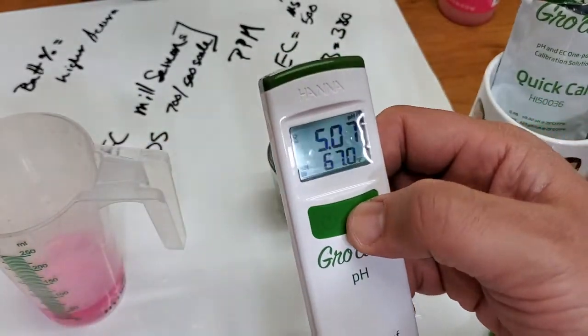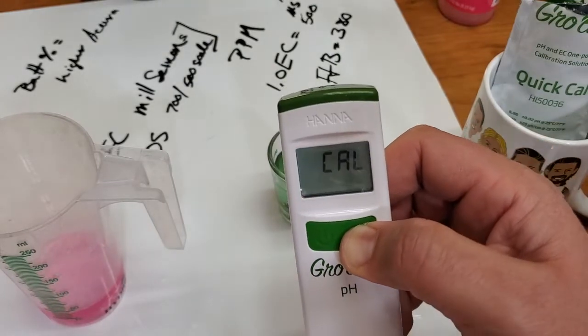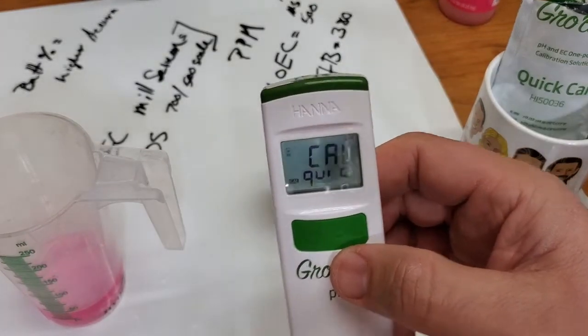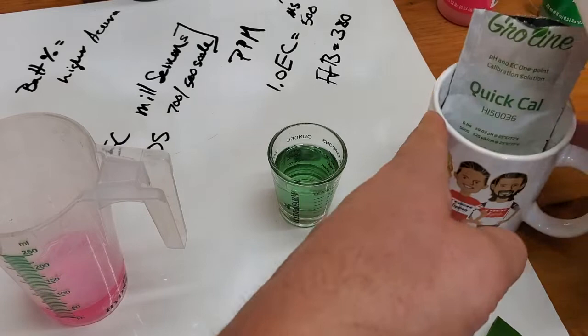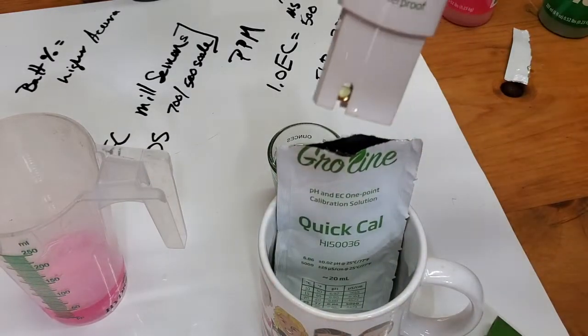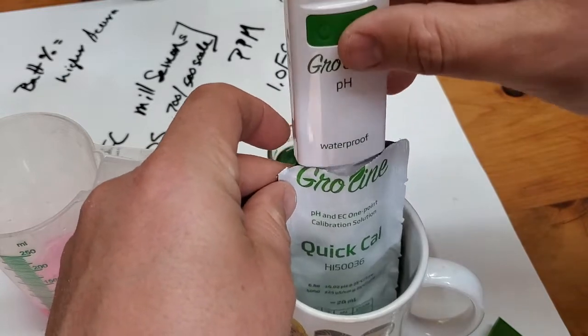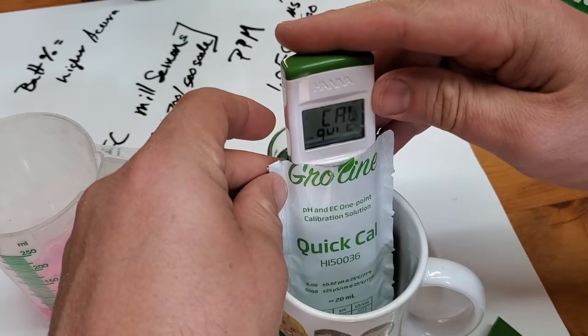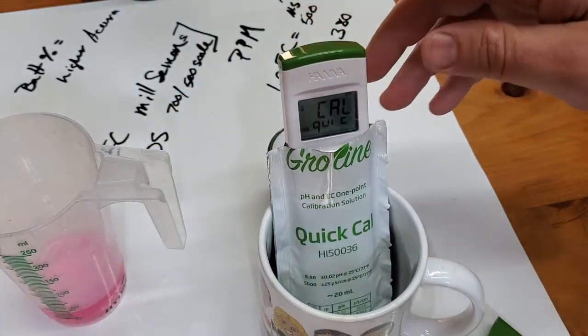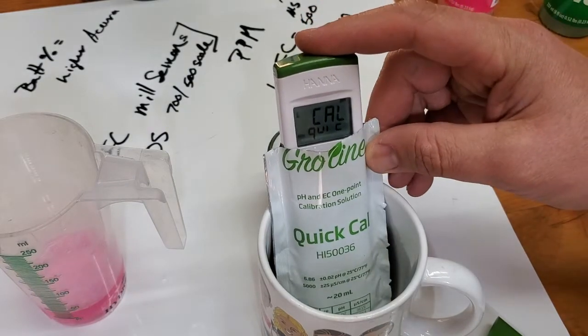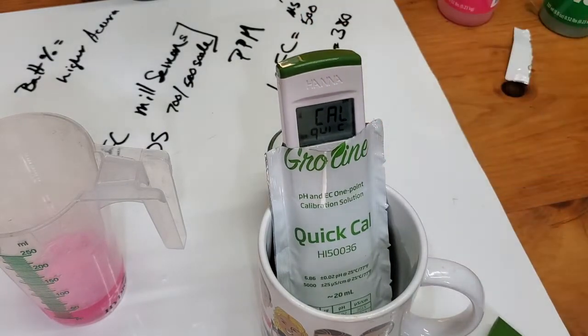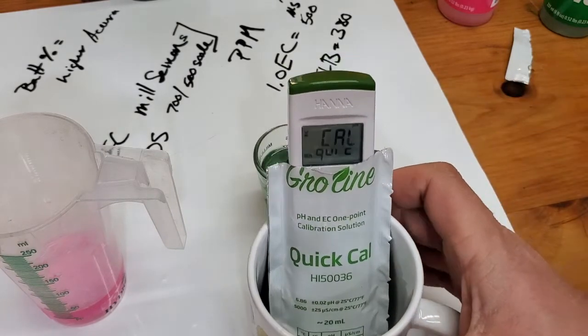We're just gonna hold down Cal and it's saying Quick Cal. So I've got my bag of Quick Cal still out here from 9814 demonstration. I'm just gonna throw that joker down in there and it's calibrating.